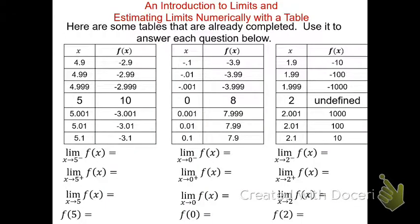Here are three sets of tables. For each one, we're asked to find the limit from the left, the limit from the right, whether the overall limit exists, and the specific function values f(5), f(0), and f(2). Note that the limit and the specific function value may not always be the same, and that's fine.